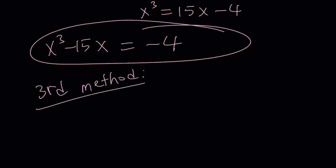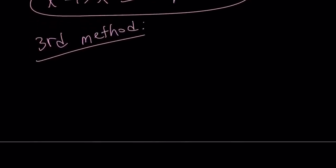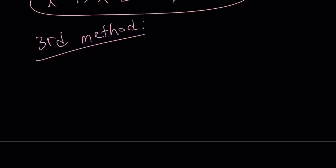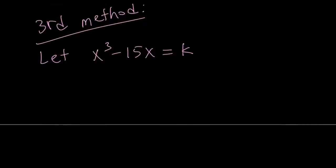My third method, you know, a lot of times I don't really do a third method, but polynomials sometimes allow you to use more than two methods. So for my third method, I'm going to let x cubed minus 15x equal k. And obviously this gives us a cubic equation if you put everything on the same side. So remember, I'm trying to find the value of x cubed minus 15x given that x squared minus 4x is equal to negative 1.